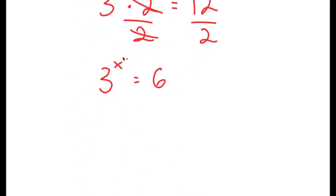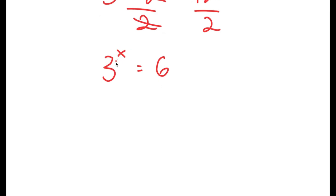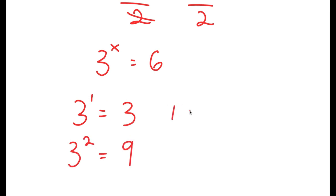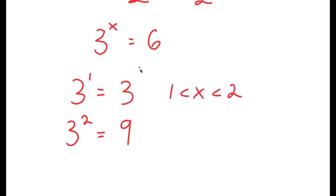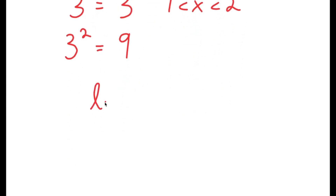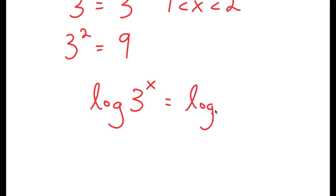To solve this, we know that x is going to be a decimal because 3 to the power of 1 is 3 and 3 to the power of 2 is 9. So x is going to be somewhere in between 1 and 2. We want to find the exact value of x, so I'm going to start by taking the log on both sides. So I get log of 3 to the power of x is equal to log 6.